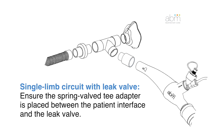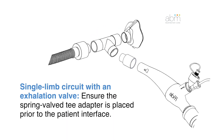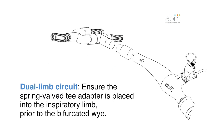If using a single-limb circuit with a leak valve, ensure the spring valve T-adapter is placed between the patient interface and the leak valve. If using a single-limb circuit with an exhalation valve, ensure the spring-valved T-adapter is placed prior to the patient interface. If using a dual-limb circuit, ensure the spring-valved T-adapter is placed into the inspiratory limb prior to the bifurcated Y.